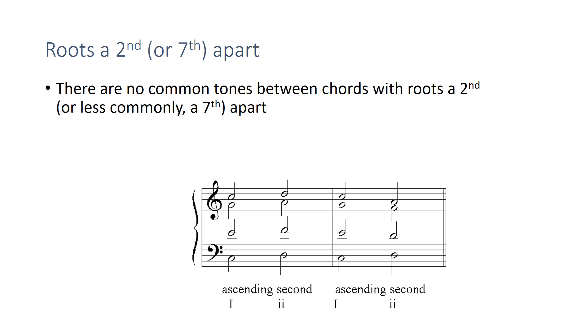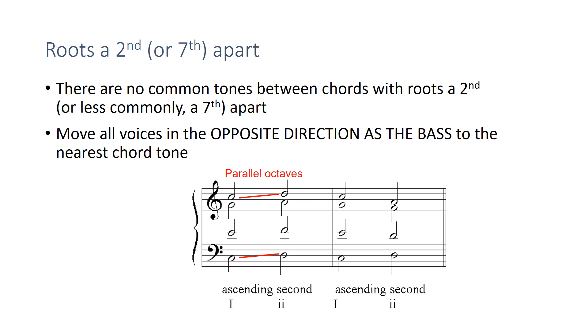One of these is correct, and one of them is not. Which one do you think is the wrong one? You're going to have to move all the voices in the opposite direction as the bass. And the reason for this is if you don't, you're going to get parallel octaves and parallel fifths. Since they're all moving in the same direction in this first one, you can hear how there's lots of parallel motion. And we don't want to do that because we want to keep the voices independent. And they lose their independence when they're moving in parallel motion. Okay, so that's the incorrect version. Don't do that.